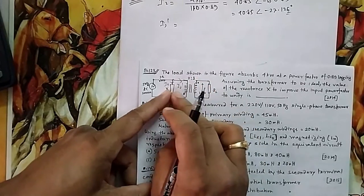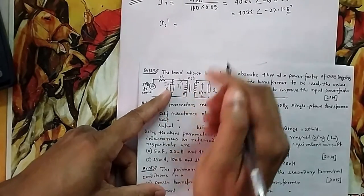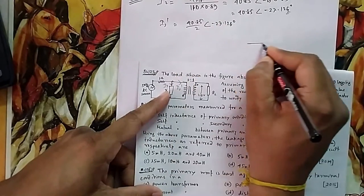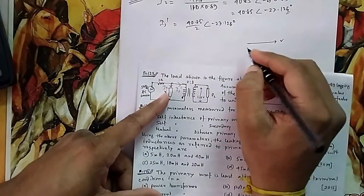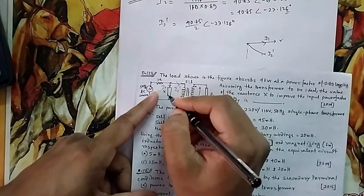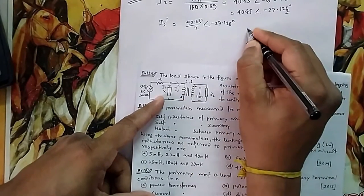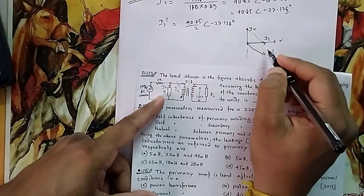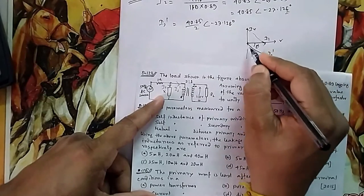This I2 dash and this is Ix actually. So what is this I2 dash? If you reflect it here, because it is 2 is to 1, this side voltage is increasing, so if you send your current it should decrease. So 40.85 divided by 2 at an angle minus 27. If you take your voltage is here, so your current is coming somewhere here - I2 dash. Your I1 is I2 dash plus this Ix, so obviously your Ix should be somewhere here so that the resultant of these two should be here.